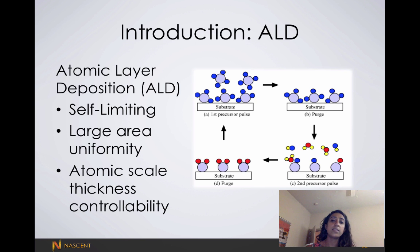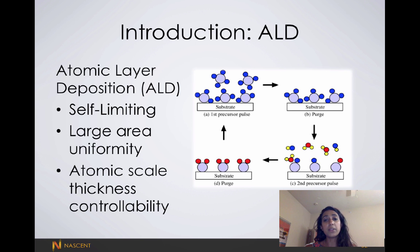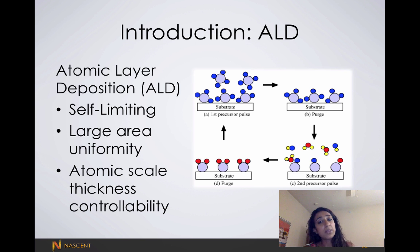In ALD, we usually have two chemicals that are paired together. For example, I deposit titanium nitride at Pickle Research Center. At Pickle, the precursors for titanium nitride are TD-MAT, or tetrakis dimethylamidotitanium.